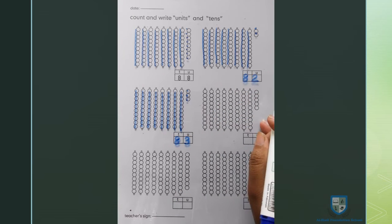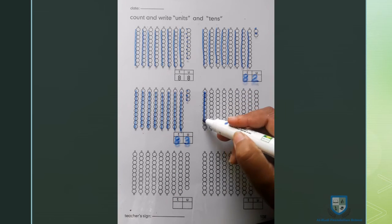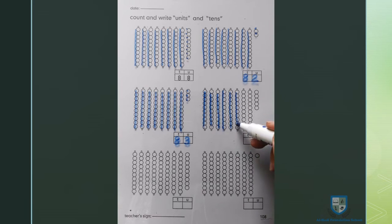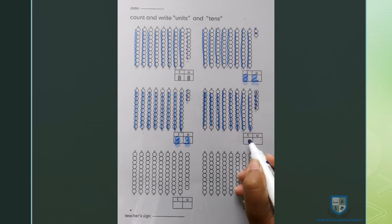अब हम अगली beads को count करेंगे। 10, 20, 30, 40, 50, 60, 70, 80, 81, 82, 83, 84, 85. 8 tens, 5 units. 85.